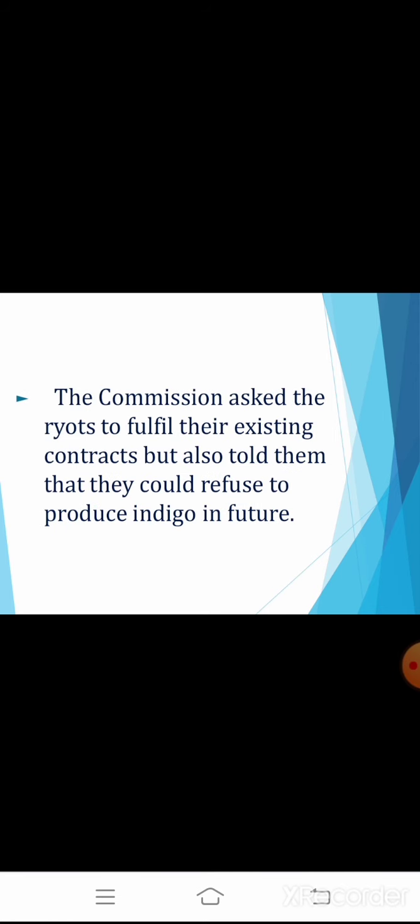The commission asked the Riyots to fulfill their existing contracts — whatever contracts they already had, they should complete those. However, it told them that in the future they could refuse to produce indigo. So the commission's position was that existing contracts should be honored, but the Riyots would be free to refuse future indigo production.